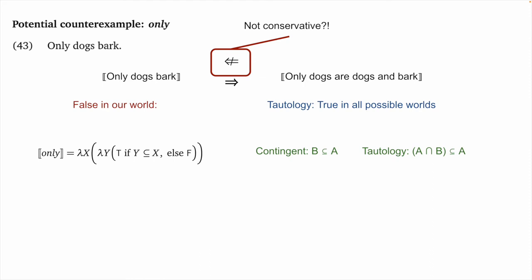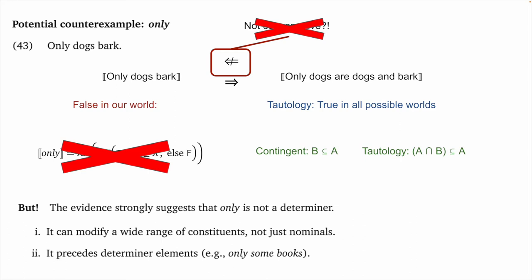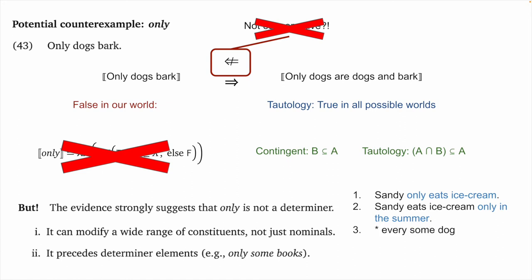Has our proposed universal already fallen? I would say it hasn't, because only is not a determiner but rather a very complex adverb or adnominal modifier. It looks like a determiner in 'only dogs bark,' but it also appears on verb phrases like 'Sandy only eats ice cream,' on prepositional phrases like 'Sandy eats ice cream only in the summer,' and with determiners as in 'only some dogs' — whereas determiners don't typically stack like 'every some dog.' Only is also highly focus-sensitive, so our proposed universal is arguably not threatened by only in particular, though there may be other threats.